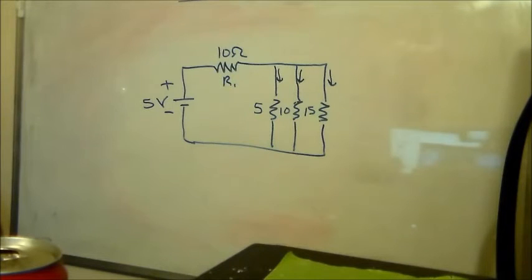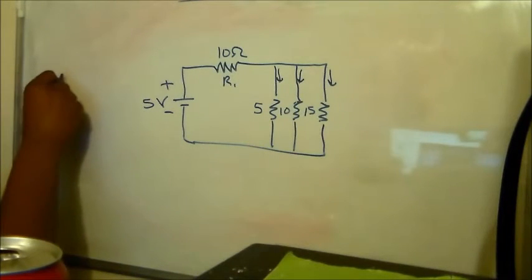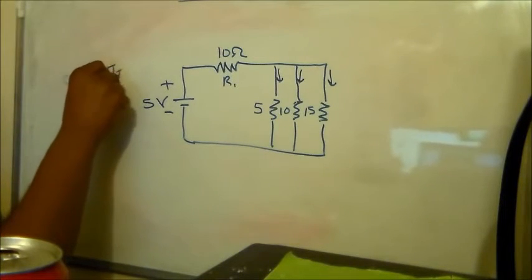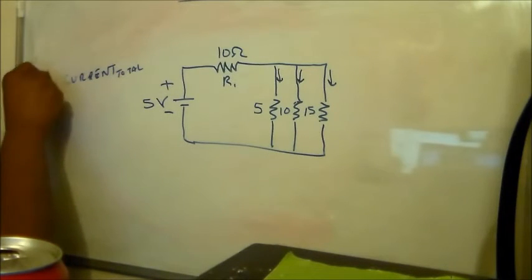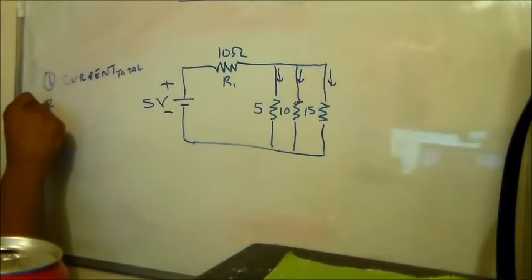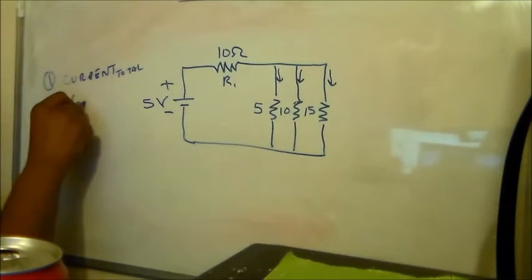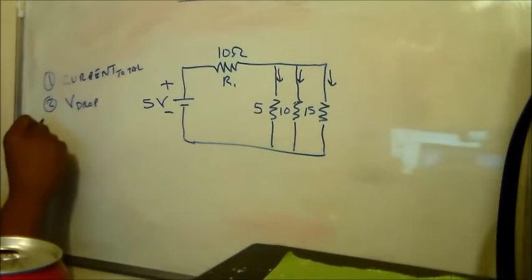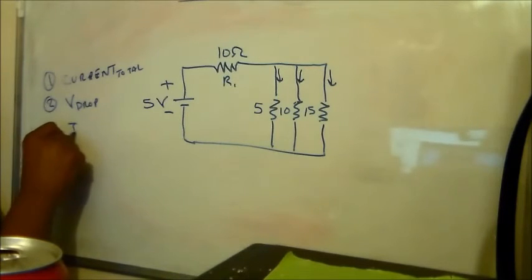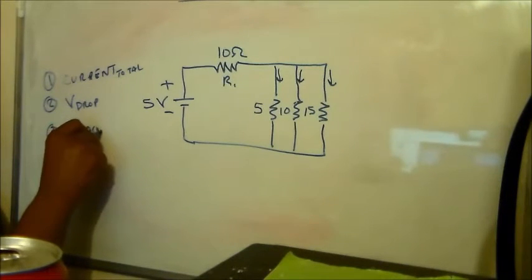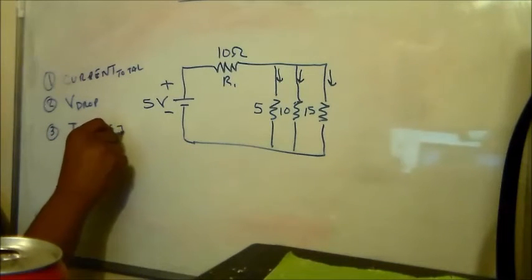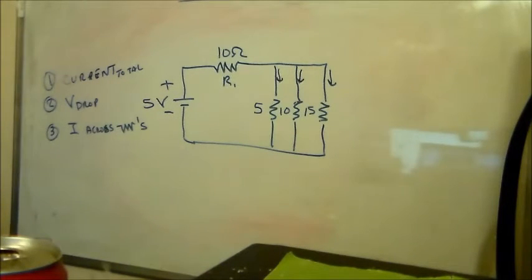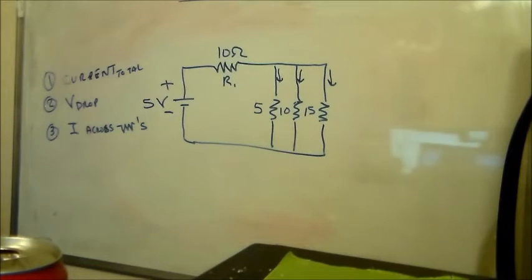So, the question we want to find is: what is the current? We want to know the total current. That's one. Number two, we want to identify the voltage drop across all resistors. And then third, we want to know the current across the resistors.